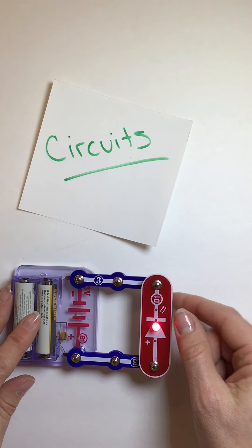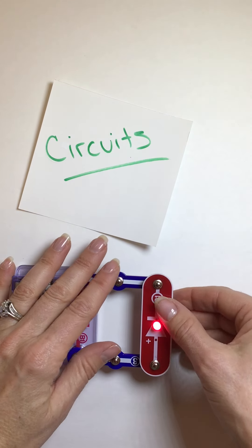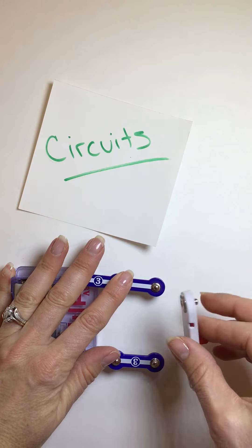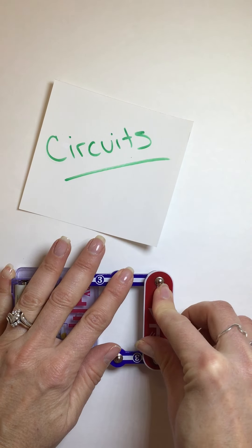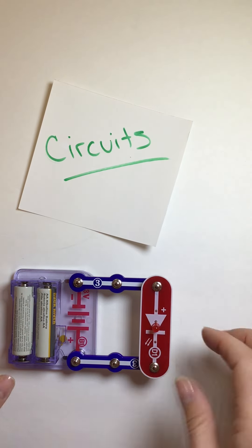And I know that I have it facing the right way because my light turns on. If I have it the wrong way, the electrons no longer flow in a circle. It stops.